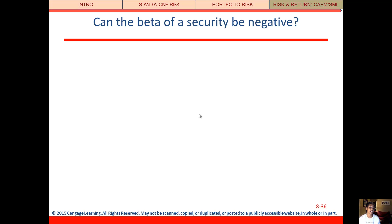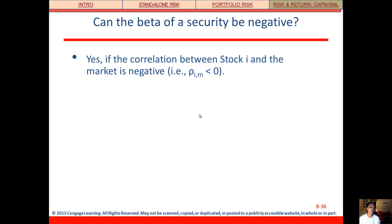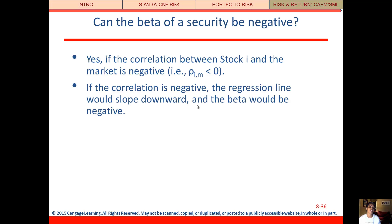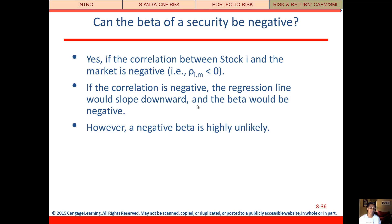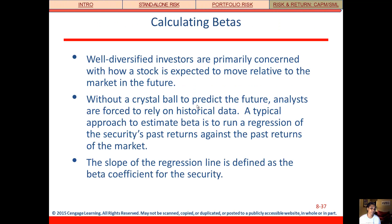A negative beta typically occurs when there's a negative correlation between the stock and the market, as we're seeing with Collections. If the correlation is negative, the regression line slopes downward — because beta is just a slope coefficient — making beta negative. Again, not very likely.